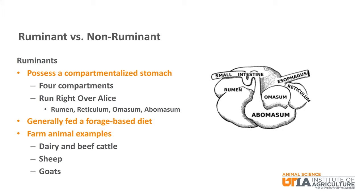One quick way to remember the order of the four parts is with the saying 'run right over Allis,' or RROA, for the rumen, reticulum, omasum, and abomasum. Each compartment has a distinct function as it relates to the digestion of ingested feed. Ruminants are generally fed a forage-based diet. Farm animal examples include dairy cattle, beef cattle, sheep, and goats.